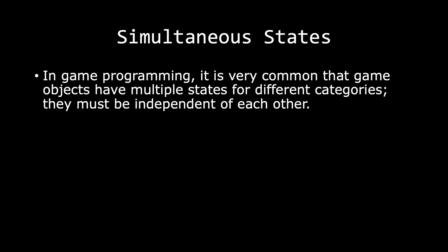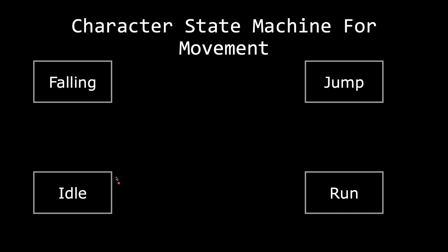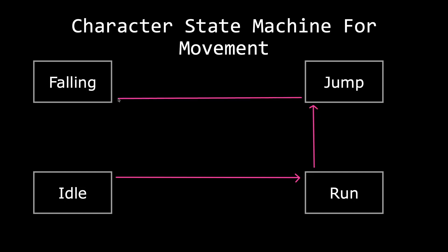In game programming, it is very common that game objects have multiple states for different categories, but they must be independent of each other. For example, we have a character state machine for player movement. We start in the idle state. At some point, our idle state can change into the run state, and our run state can change into the jump state. Our jump state needs to turn into the falling state, because what goes up must come down. As we are done falling, we change back into the idle state.